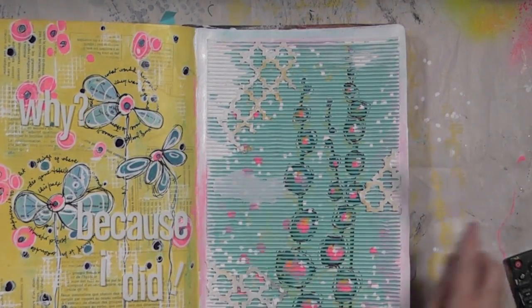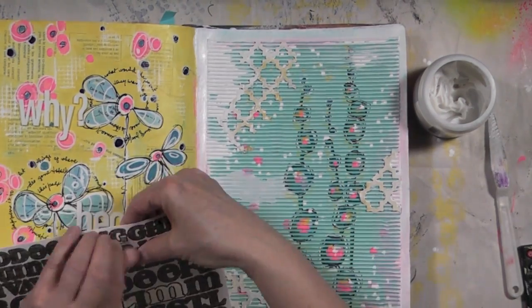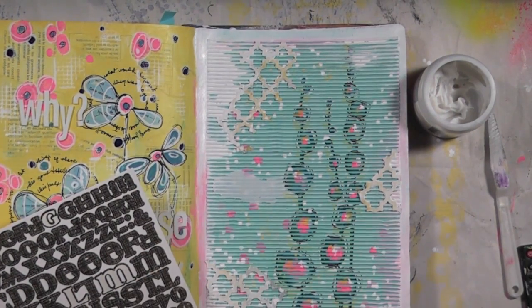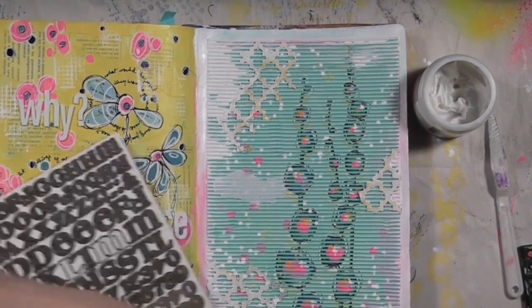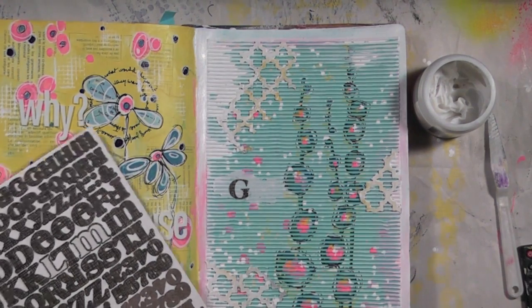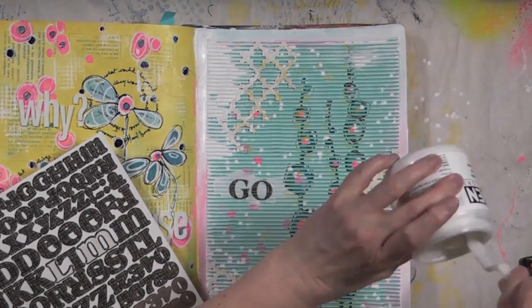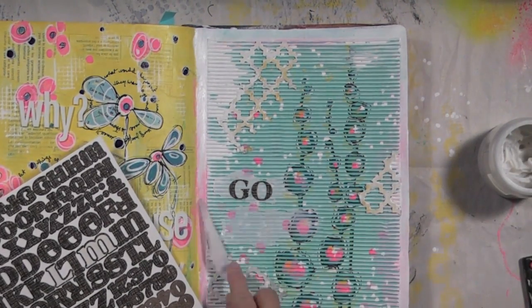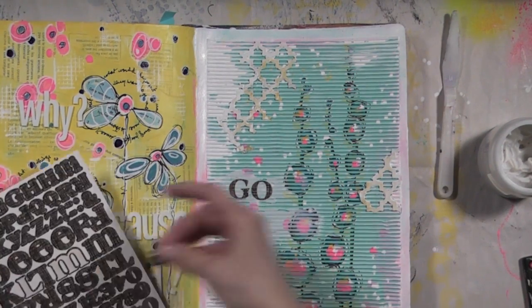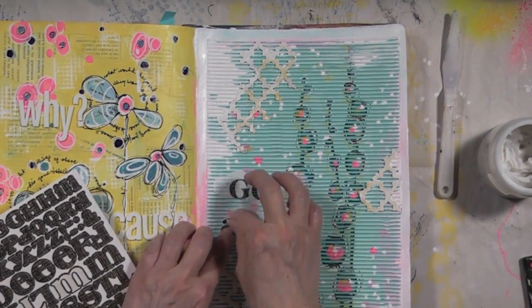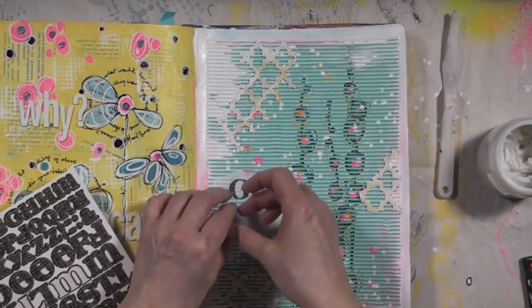For the title of this page I decided to use letter stickers. These are by Basic Grey, they're quite old though, and since I was afraid that they might not stay on the page too well, I decided to add a layer of the extra heavy gel. In that way I know that the title won't go away.